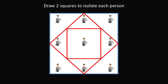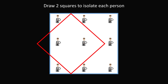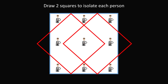In this particular solution, both red squares are inside the boundary square. But let's see if there's another solution outside this square — looking for outside-the-box solutions. We take the boundary square, rotate and scale it to isolate the two people in the upper-left and lower-left corners, then make an identical square to isolate the upper-right and lower-right corners. And amazingly, we have another solution — another way to draw two squares to isolate each of the nine people. Wow!